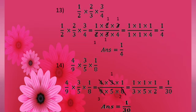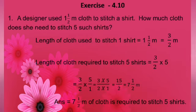Next sum: 4 by 9 into 3 by 5 into 1 by 8. Write it as 4 into 3 into 1 by 9 into 5 into 8. Cancel common factors: 3 goes once in the numerator and 3 times in the denominator — strike out 3 and write 1, strike out 9 and write 3. Then 4 goes once in the numerator and 2 times in the denominator — strike out 4 and write 1, strike out 8 and write 2. The answer is 1 by 3 into 5 into 2, which gives 1 by 30.